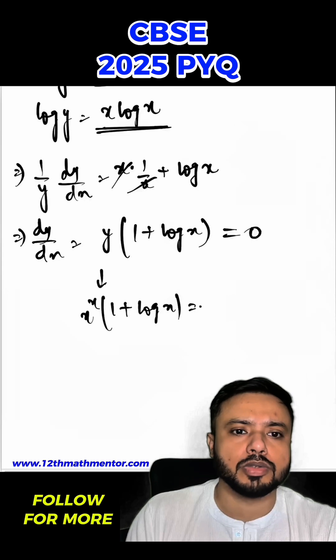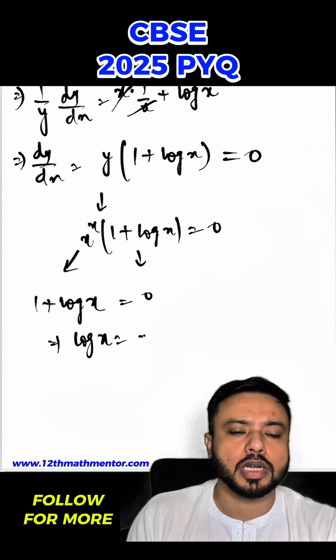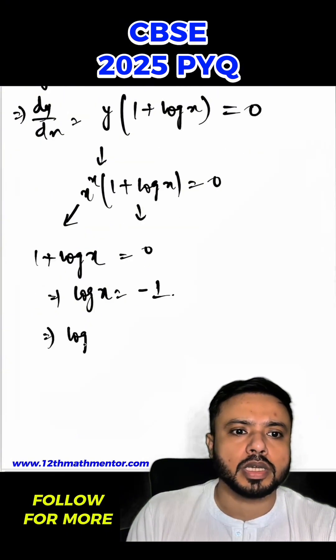+ log x) will be equal to 0. Hence this equals 0 and this equals 0 when 1 + log x is equal to 0. That means log x = -1, so log x will be